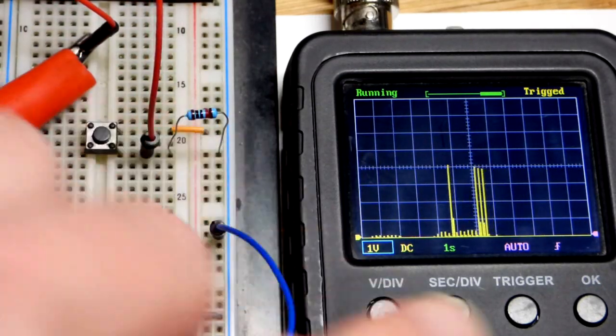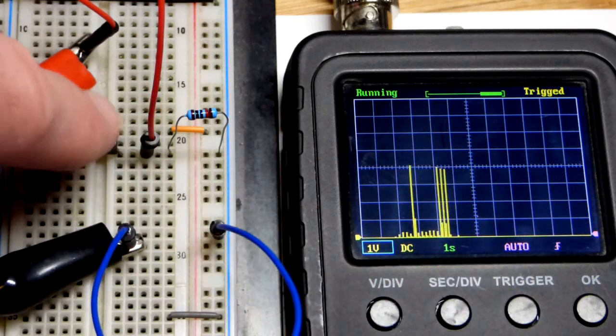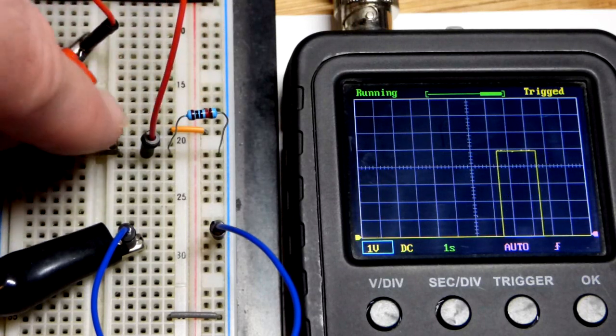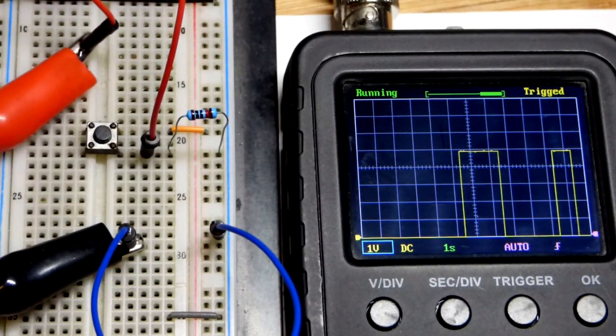So we have the pull-down resistor now. It's staying 0 volts until we press the switch, which is connected to the positive supply up there, 5 volts. So it's going to hold it down to 0.